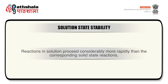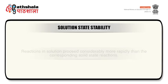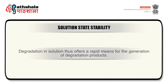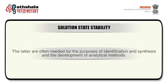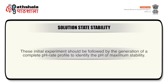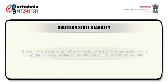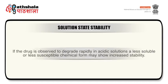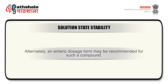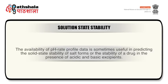Reactions in solution proceed considerably more rapidly than the corresponding solid state reactions. Degradation in solution thus offers a rapid means for the generation of degradation products, which are often needed for the purpose of identification, synthesis, and the development of analytical methods. This initial experiment should be followed by the generation of a complete pH rate profile to identify the pH of maximum stability. If the drug is observed to degrade rapidly in acidic solutions, a less soluble or less susceptible chemical form may show increased stability. Alternately, an enteric dosage form may be recommended. The availability of pH rate profile data is sometimes useful in predicting the solid state stability of salt forms or the stability of drug in the presence of acidic and basic excipients.